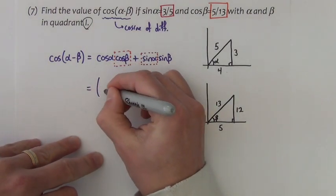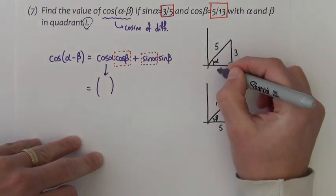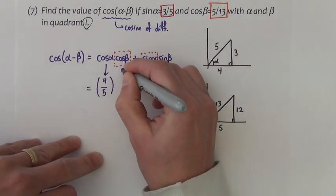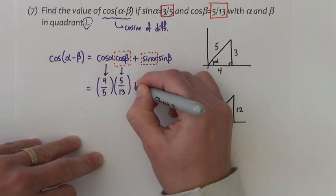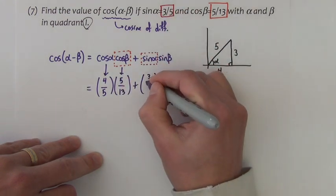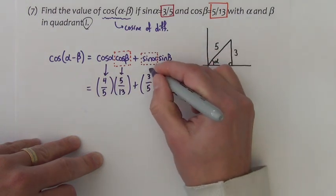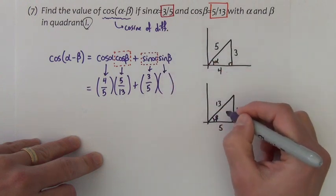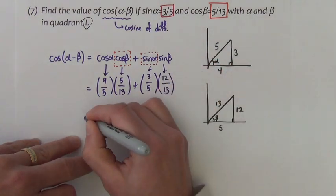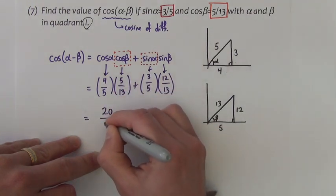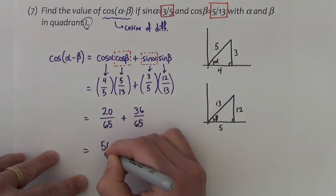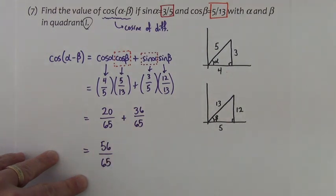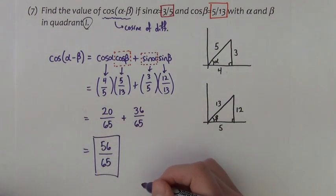Cosine α is from that triangle 4 fifths. Cosine β was given to us or from the triangle is 5 thirteenths. Sine α was given to us or you can get it from the triangle is 3 fifths. Sine β we need the triangle, that's 12 thirteenths. Multiplying from here we get 20 over 65 plus 36 over 65. If it reduces you want to go ahead and reduce it.